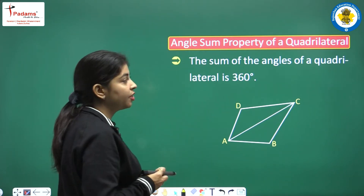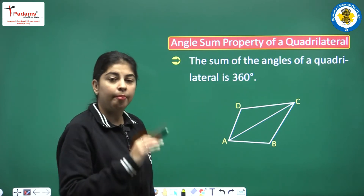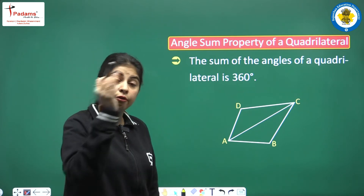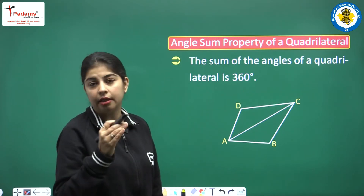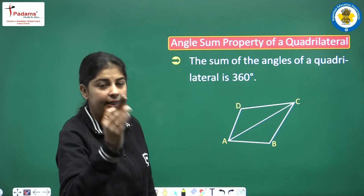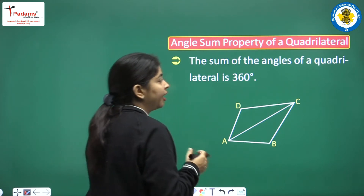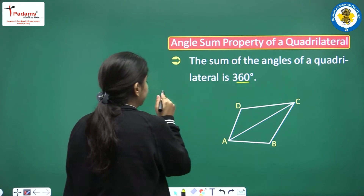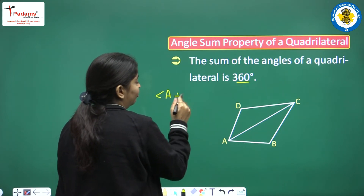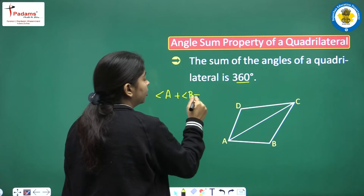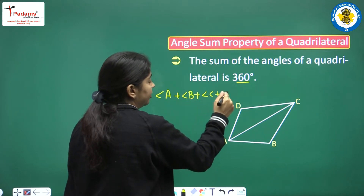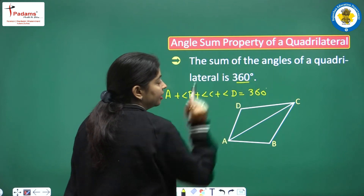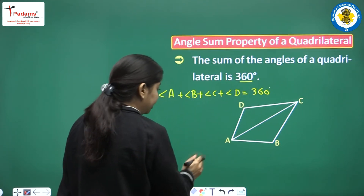Now let's study the angle sum property of a quadrilateral. In a quadrilateral ABCD, there are four angles and their sum is 360 degrees. That means angle A plus angle B plus angle C plus angle D equals 360 degrees. Let's see the proof of how it equals 360.